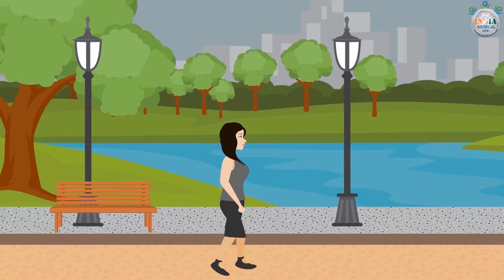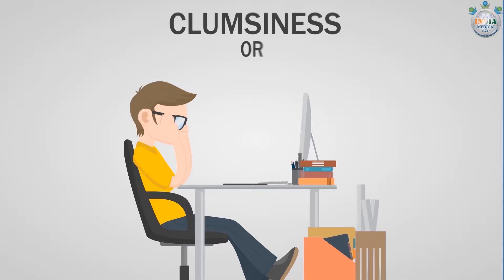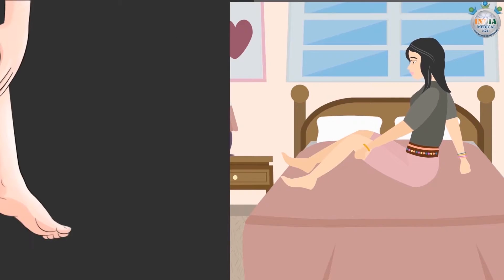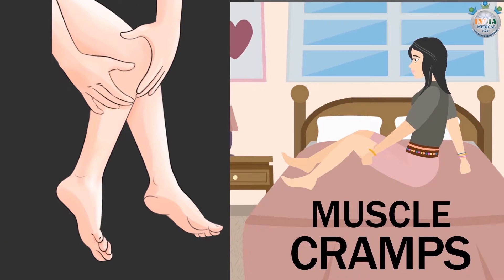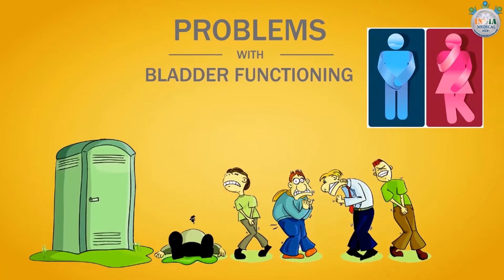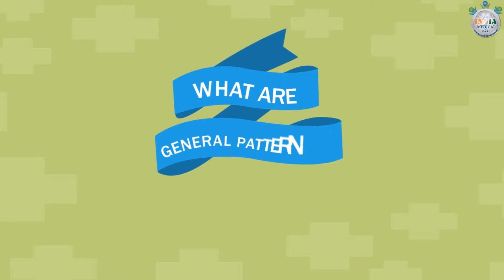Additional symptoms include loss of balance, clumsiness or lack of coordination, muscle cramps, and poor balancing or problems with bladder functioning.